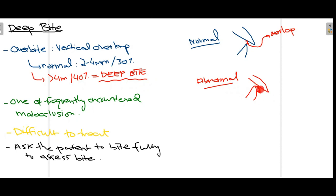Deep bite shows excessive overlap between the maxillary and mandibular incisors. It is one of the most frequently encountered malocclusions, often difficult to treat — easier in growing patients but difficult in adults. To evaluate deep bite, we ask the patient to occlude in full centric occlusion, either habitually or fully, and then clinically assess whether normal overbite or deep bite is present.